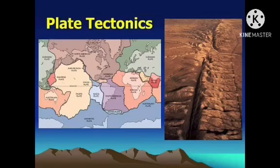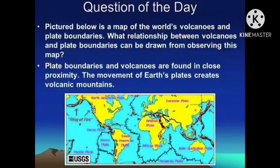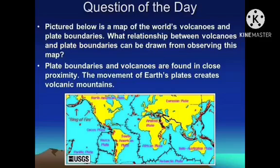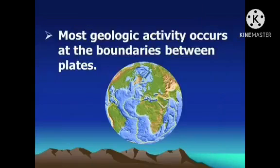Specifically, you will identify the tectonic plates of the world and describe how these tectonic plates behave. The picture below is a map of the world's volcanoes and plate boundaries. What relationship between volcanoes and plate boundaries can be drawn from observing this map? That's correct — plate boundaries and volcanoes are found in close proximity. The movement of Earth's plates creates volcanic mountains.